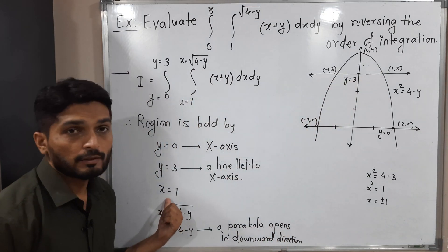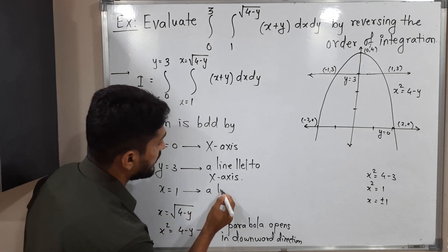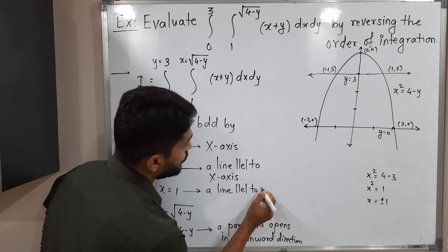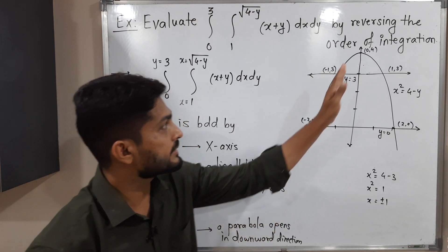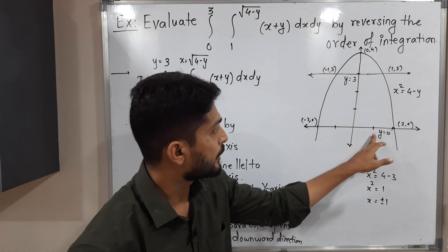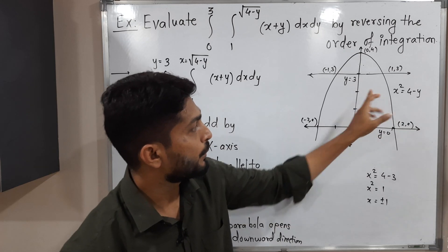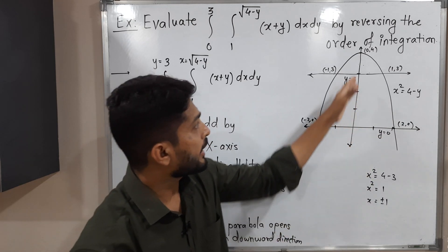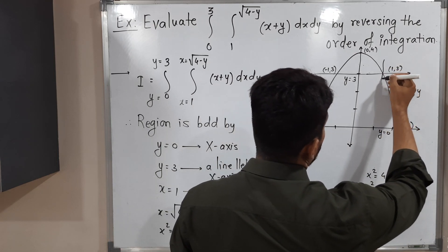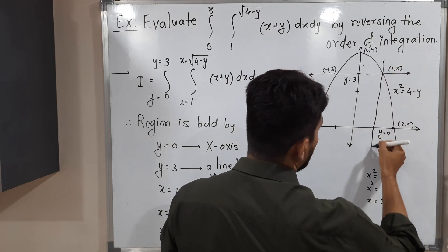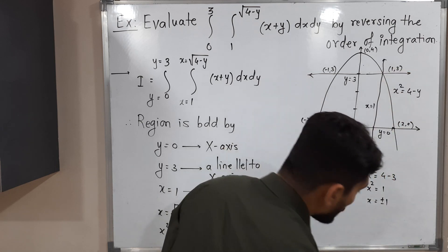The remaining curve is x equals 1, which is a line parallel to the y-axis passing through x equals 1. We draw a line parallel to the y-axis passing through x equals 1.